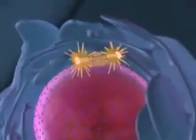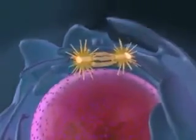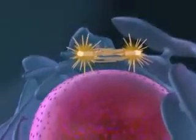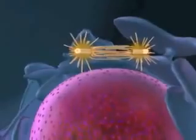As meiosis begins, a spindle forms and duplicated centrosomes start to migrate toward opposite poles of the cell. Back in the nucleus, the chromosomes are condensing.